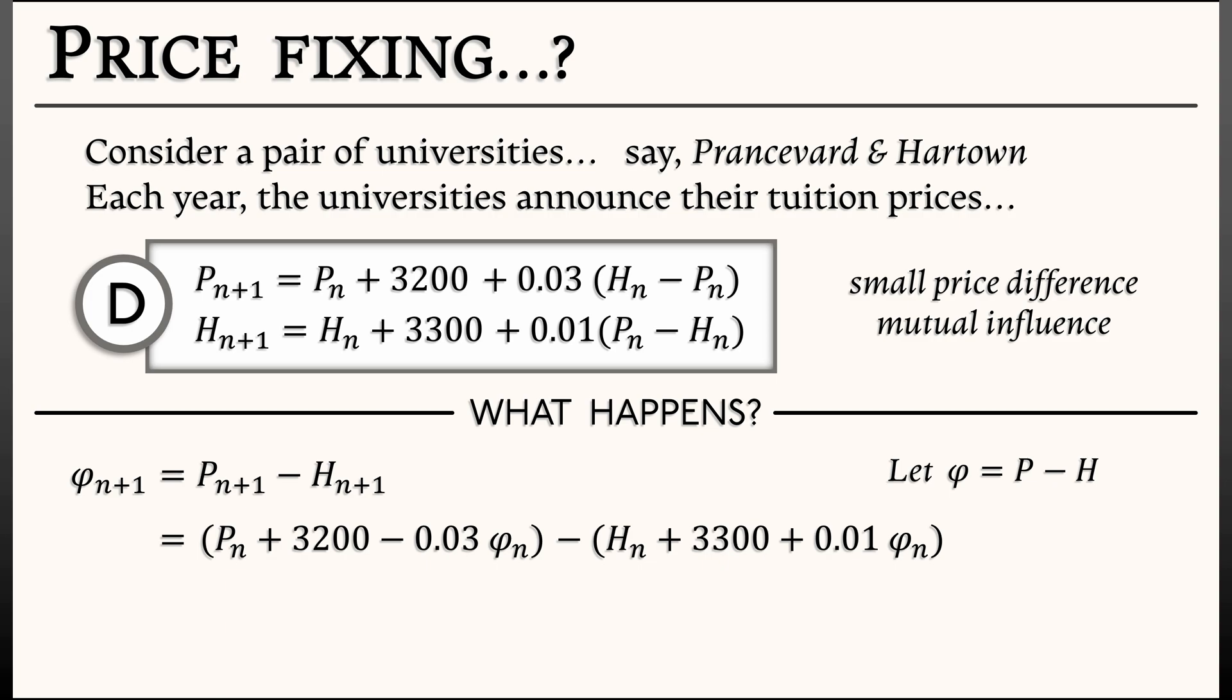which is quantity H n plus 3,300 plus 0.01 phi n. Combining this together, you see a P n minus H n term out in front. That's really phi n minus 0.04 phi n minus 100. That's 3,200 minus 3,300. Put all this together, what do we get? We get 0.96 phi n minus 100.